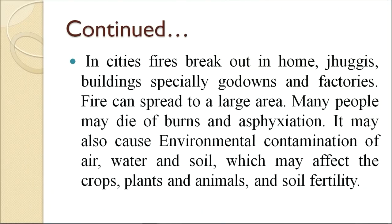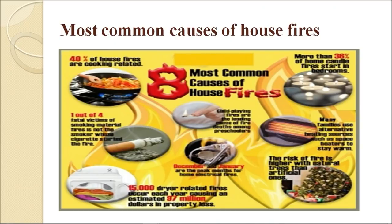In cities, fire breaks out in homes, jhuggis, buildings, especially godowns and factories. Fire can spread to a large area. Many people may die and it may cause environmental contamination of air, water and soil, which may affect crops, plants, animals and soil fertility. During summer months, such fires result in casualties and enormous economic losses.